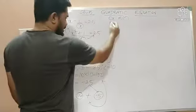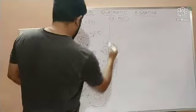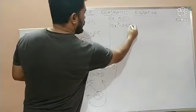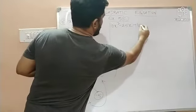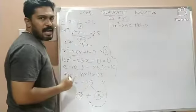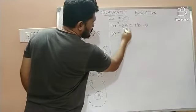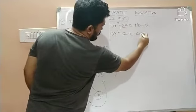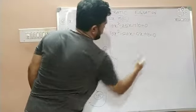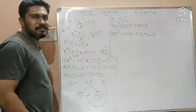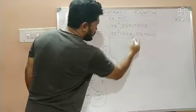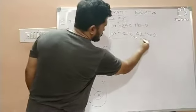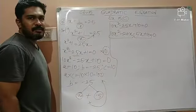Yes. So, guys, I can write this quadratic equation, which is 10x square minus 25x plus 10 is equal to 0 as 10x square. This minus 25 is rewritten as minus 20x minus 5x plus 10 is equal to 0. Now, we can group these terms. The first group is 10x square minus 20x and the second group is minus 5x plus 10.